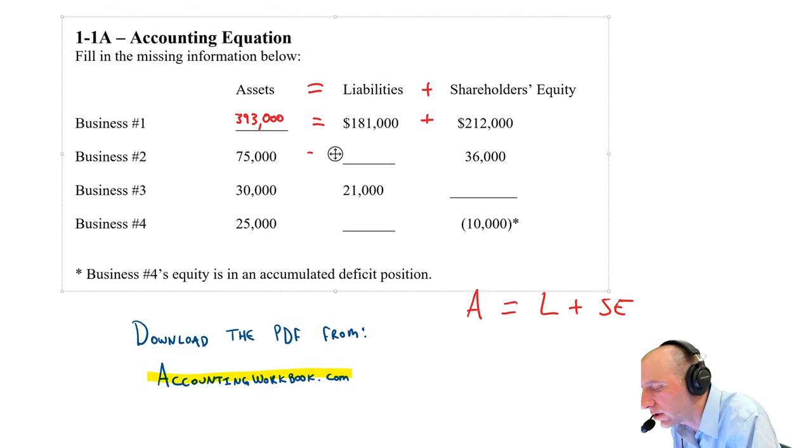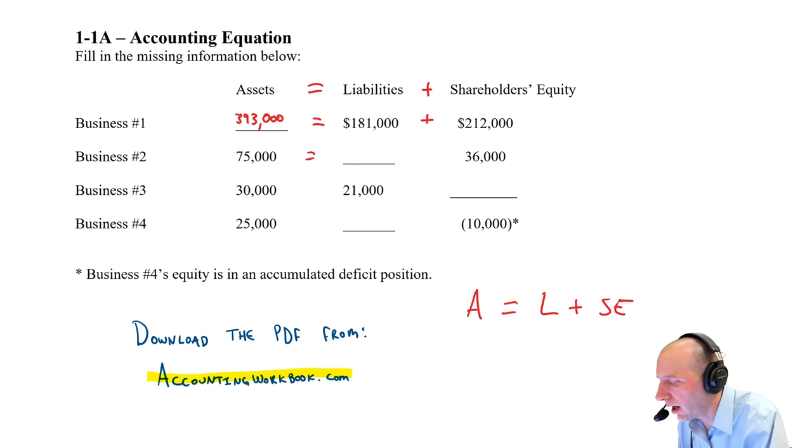Let's do business number two. The assets are $75,000. We don't know the liabilities, but we know the equity is 36. So we know 36 plus whatever is in this blank space equals 75. Or stated differently, 75 minus 36 equals whatever is in the blank space.